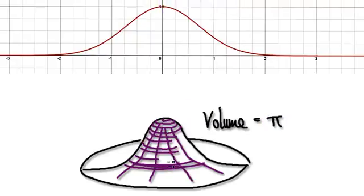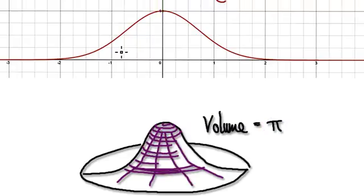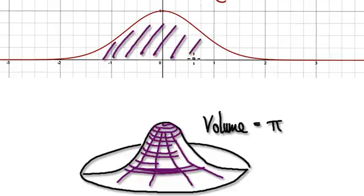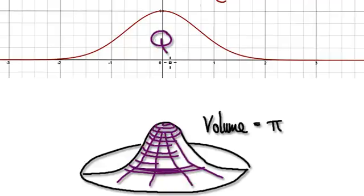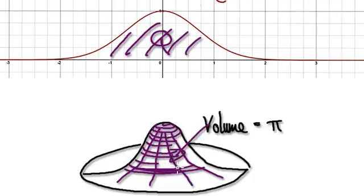We are still trying to find out the area of this thing here. Let's call this area capital Q. As it turns out, the area of this thing here is equal to the square root of the volume of this 3D solid. In other words, Q squared equals the volume of this 3D solid.